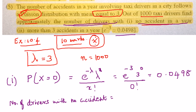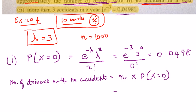Right. So out of 1000 drivers, the number of drivers who are not going to make any accident in a year is going to be 49.8, which I can approximate to 50. So out of 1000 drivers, 50 drivers will drive without making an accident.